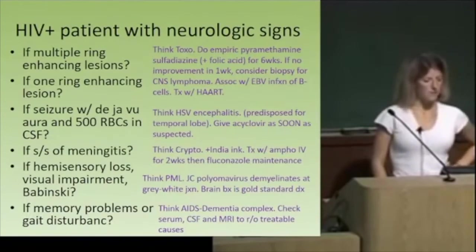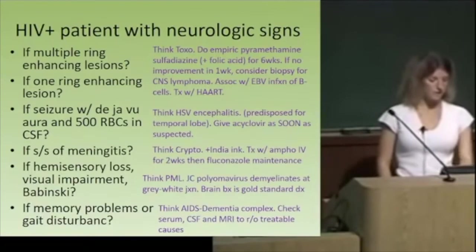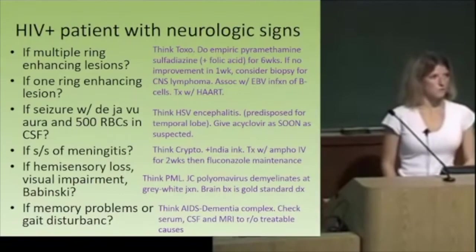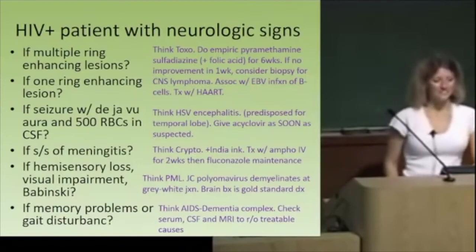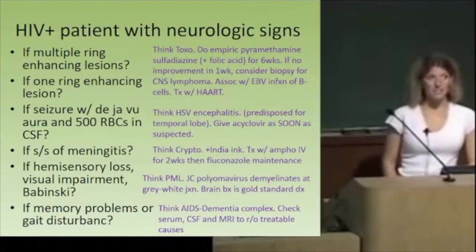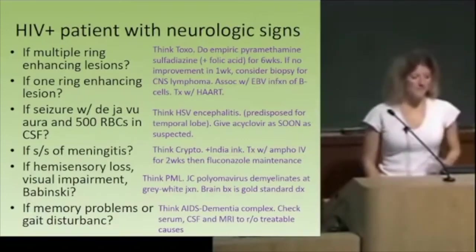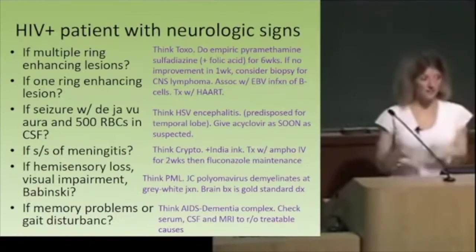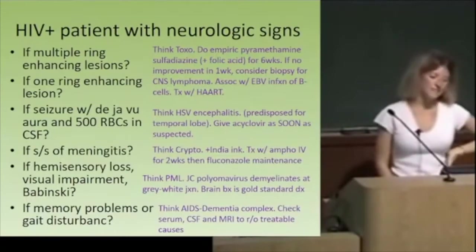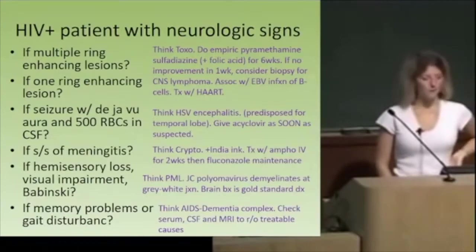If an HIV patient has hemi-sensory loss, visual problems, and a positive Babinski — that looks like MS but it's PML, caused by the JC polyomavirus. It's a demyelinating disease that preferentially affects the gray-white junction. Brain biopsy is needed to confirm, but there's no treatment other than improving the CD4 count.